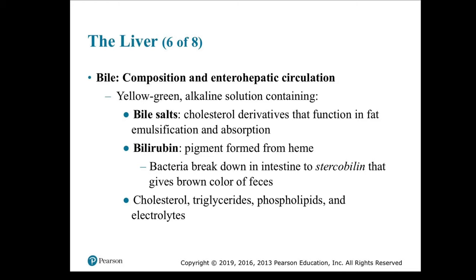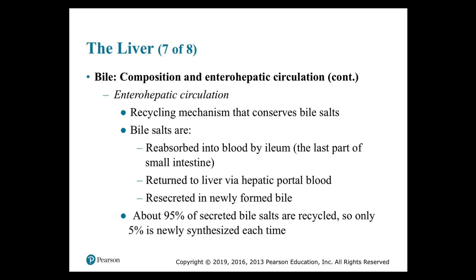Bile composition and enterohepatic circulation: bile is a yellow-green alkaline solution containing bile salts — derivatives of cholesterol that function in fat emulsification and absorption — and bilirubin, a pigment formed from heme. Bacteria break it down in the intestine to stercobilin, which gives feces their brown color. Bile also contains cholesterol, triglycerides, phospholipids, and electrolytes. Enterohepatic circulation is a recycling mechanism that conserves bile salts: bile salts are reabsorbed into the blood by the ileum and returned to the liver via hepatic portal blood, where they are resecreted in newly formed bile. About 95% of secreted bile salts are recycled — only 5% is newly synthesized.